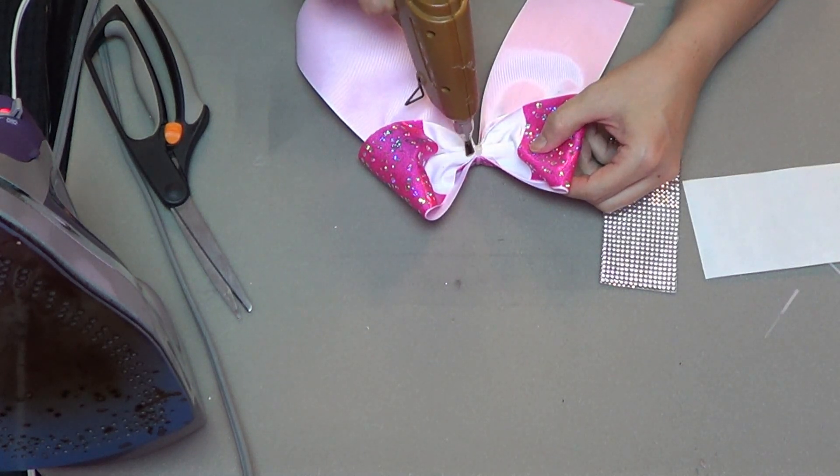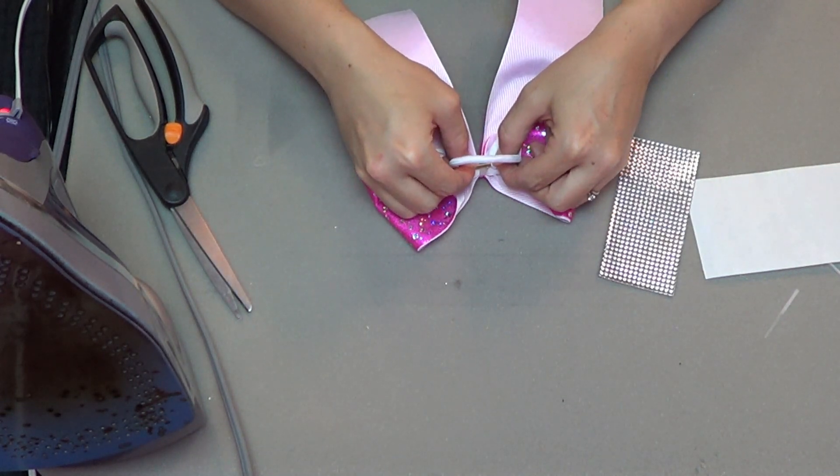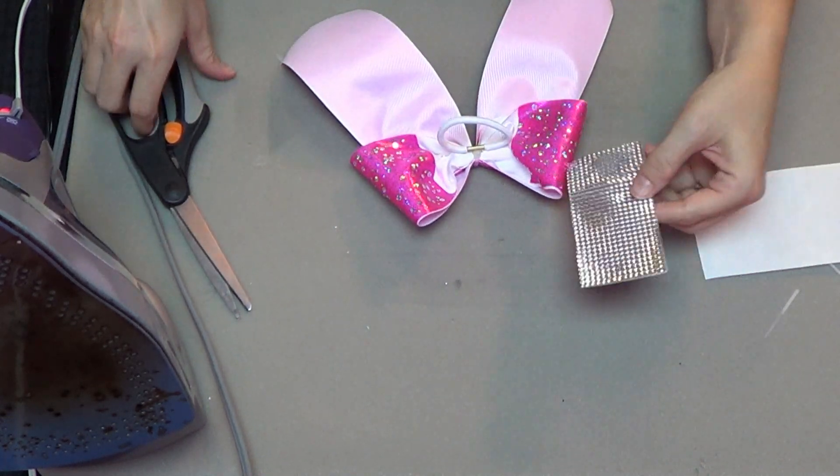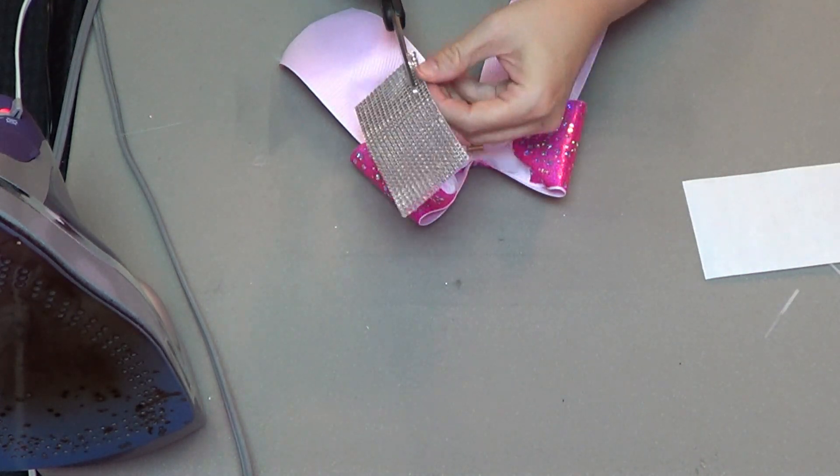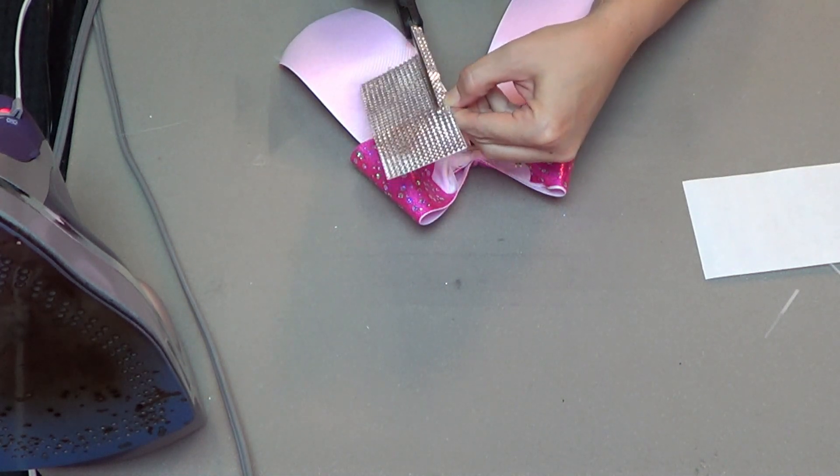I'm going to add a ponytail holder to the back with hot glue. For the center wrap, I'm going to use these adhesive gems. These are really neat—they're very sparkly and look beautiful for a center wrap for a cheer bow.